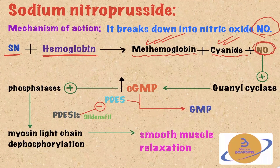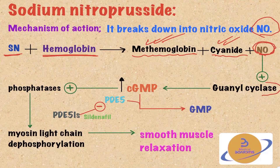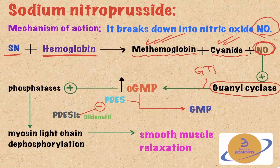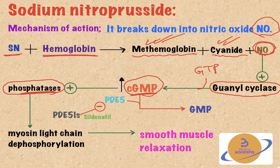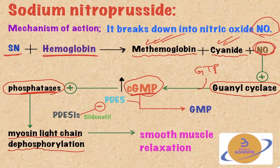Nitric oxide is a lipophilic molecule that diffuses into the inside of the smooth muscle cells. Inside the smooth muscle cells, it will stimulate the enzyme guanylyl cyclase. The guanylyl cyclase converts GTP, or guanosine triphosphate, into cyclic GMP, or cyclic guanosine monophosphate. The increased intracellular levels of cyclic GMP will stimulate protein phosphatases. These phosphatases dephosphorylate myosin chains, decreasing the interaction between actin and myosin, and this eventually leads to smooth muscle relaxation.